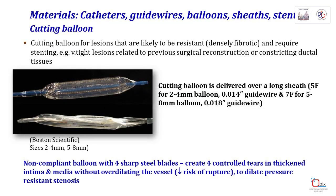Cutting balloons are non-compliant balloons with four sharp steel blades, designed to create four controlled tears in the intima and media without over-dilating the vessels. We use these mainly for lesions that are likely to be resistant — that is, densely fibrotic lesions — before stent implantation, often in vessels that have had previous surgical reconstruction or stenosis caused by constriction of ductal tissue. They require use with a long sheath to prevent trauma to structures like the tricuspid valve during withdrawal, and require a smaller wire such as the stiff V18.